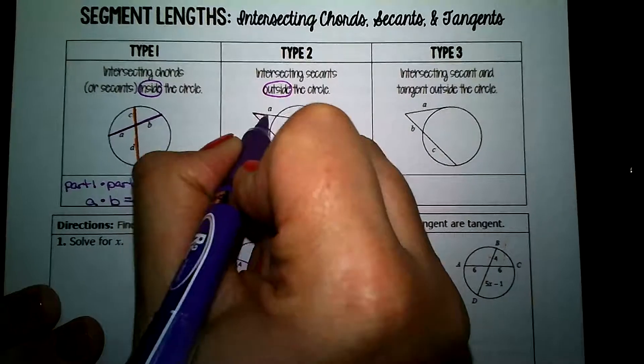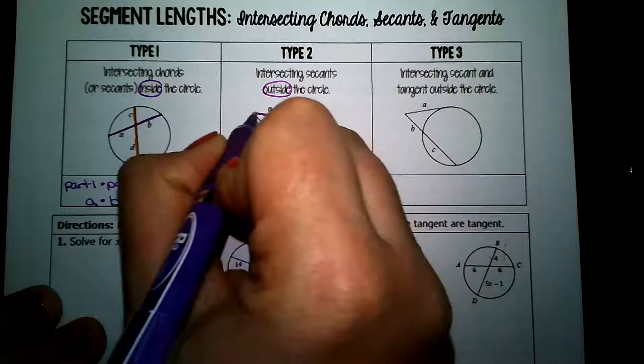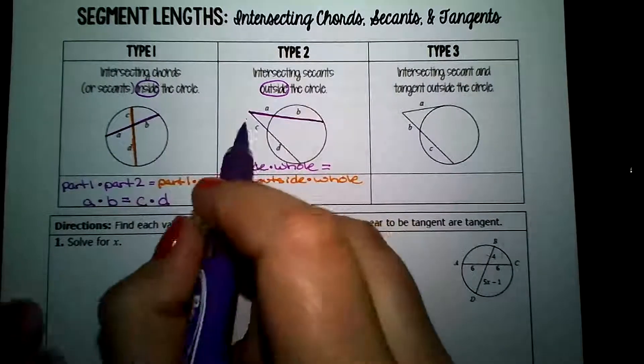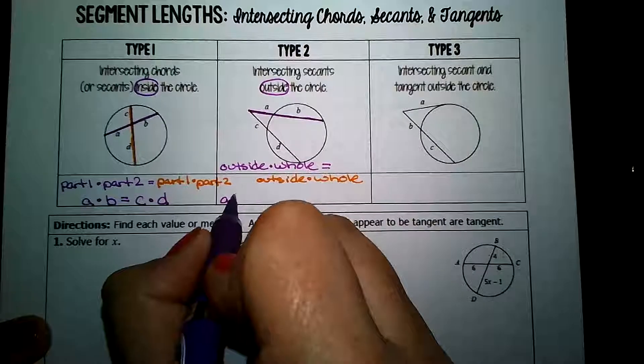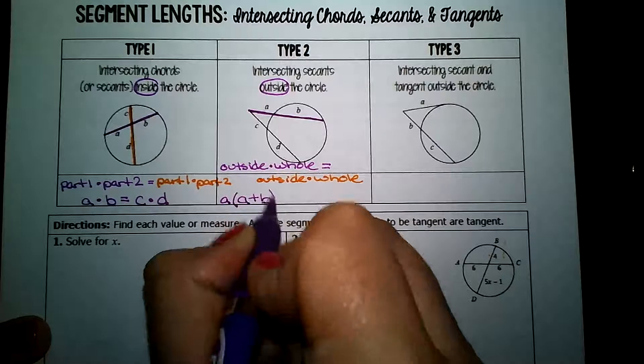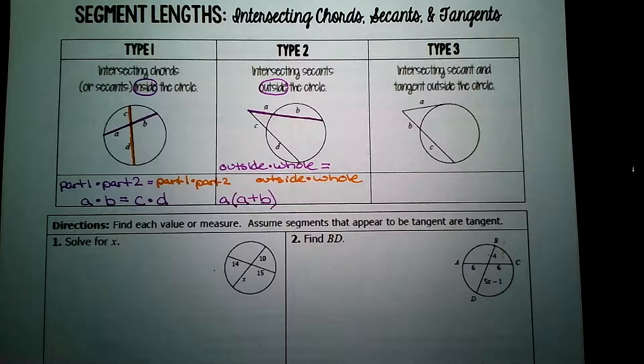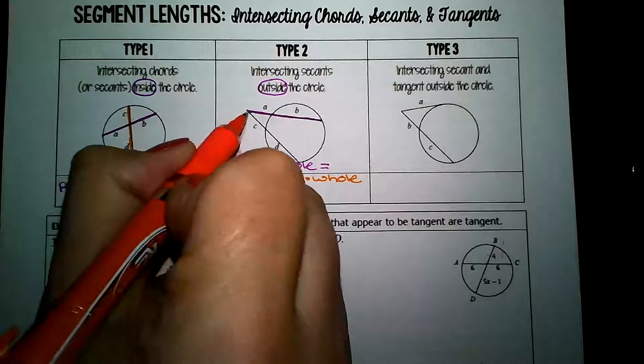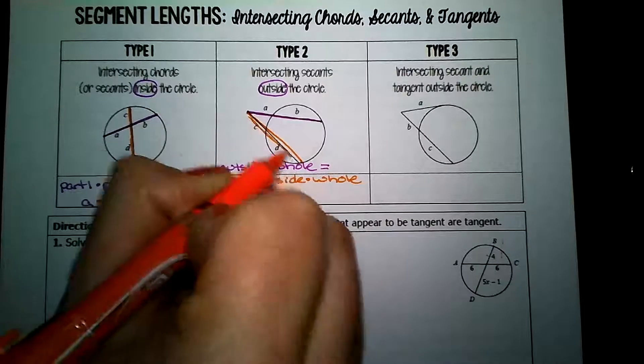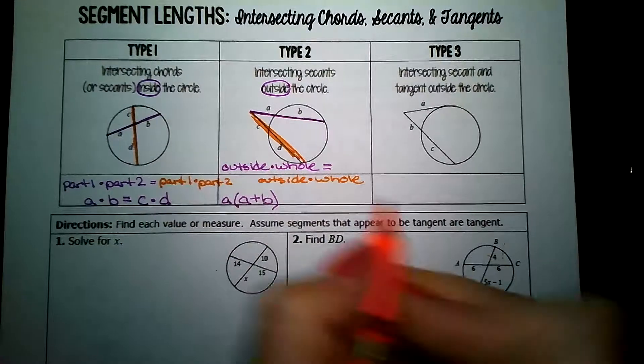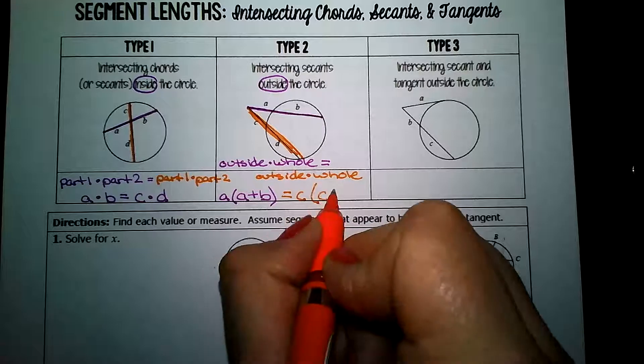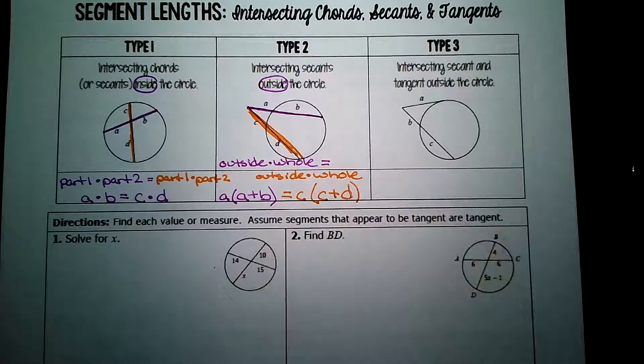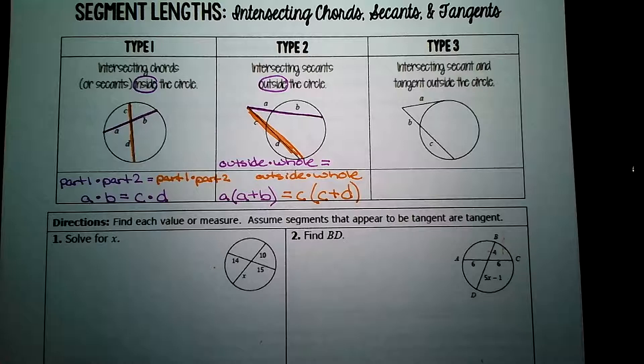So if one chord is purple, do it in purple. Let's write it out for this picture. The outside value is a. The entire secant here would be a plus b, whatever the length of a is, plus whatever the length of b is. Now let's do the second chord. I'm doing it in orange here. The outside value is c. The whole value is whatever c plus d is. You combine the two. So this becomes our pattern for outside secants.